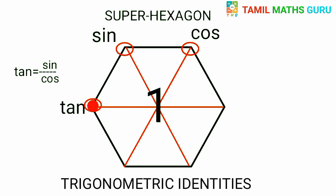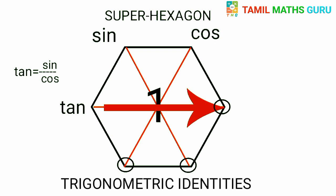Tan — if we choose clockwise, tan is equal to sin by cos. For the remaining three vertices, if tan is opposite, we choose cot.